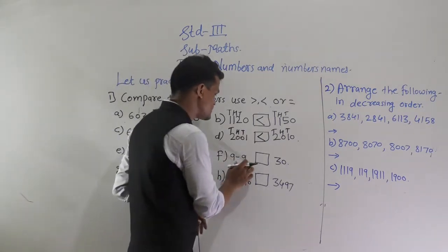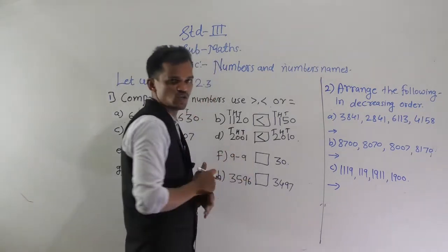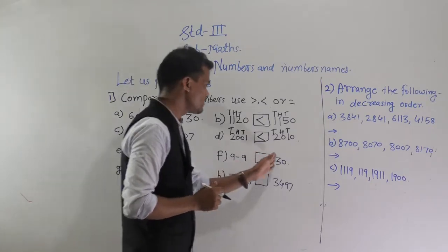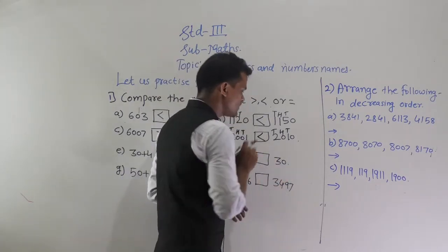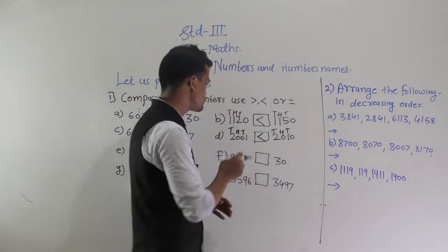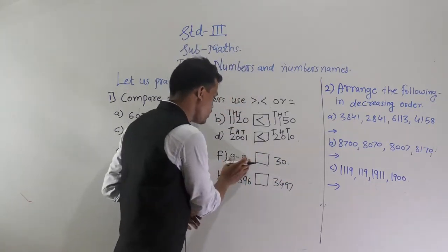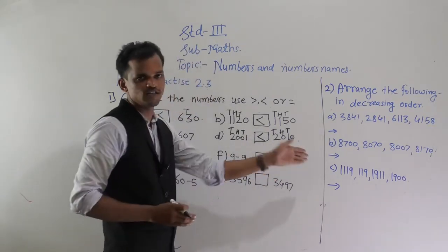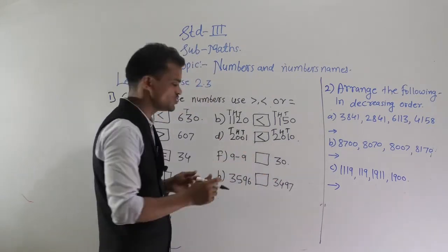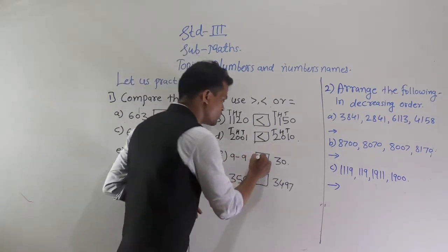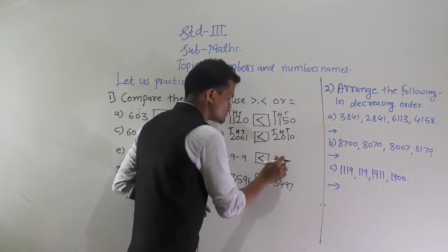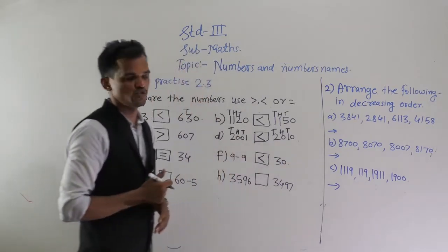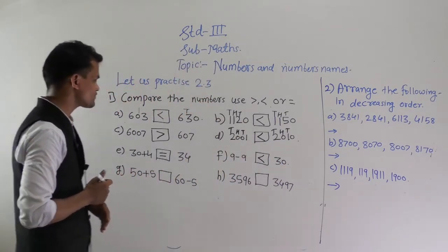Next, compare 9 − 9 and 30. 9 − 9 equals 0, and the other side is 30. Here 0 and here 30, so 30 is greater than 0. Zero has no value, so 30 is greater than 0.